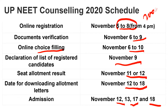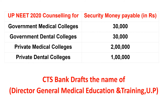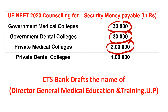Students, now we will see for the deposit security fee — what name the DD will be made in and from which bank. For government medical college, the security money will be 30,000 rupees; for government dental college, 30,000 rupees; for private medical college, 2 lakhs; and for private dental college, 1 lakh. You have to make a DD for this. You should go to any nearby bank branch and ask them for a DD — a CTS bank draft.